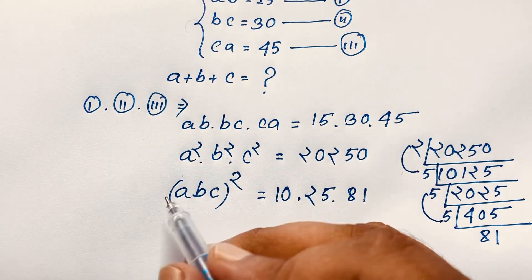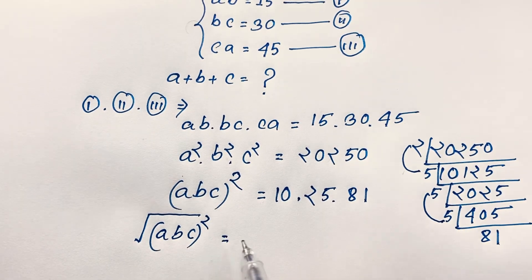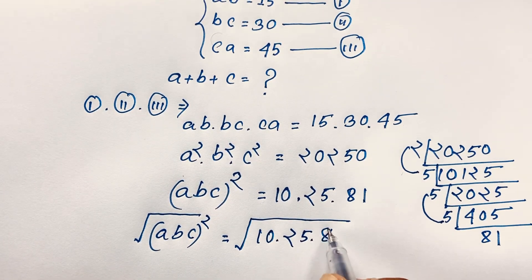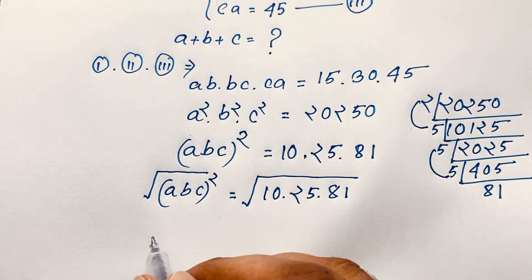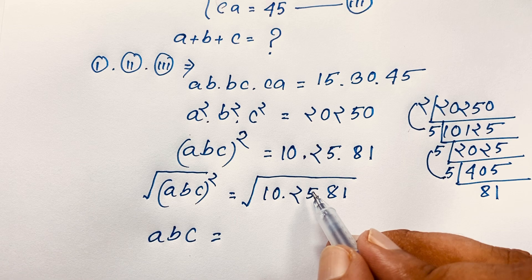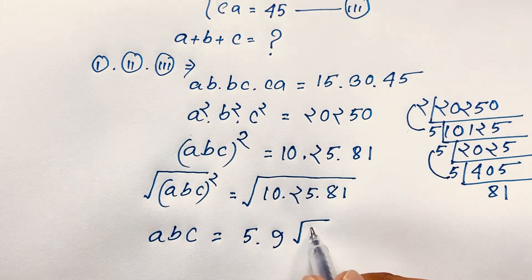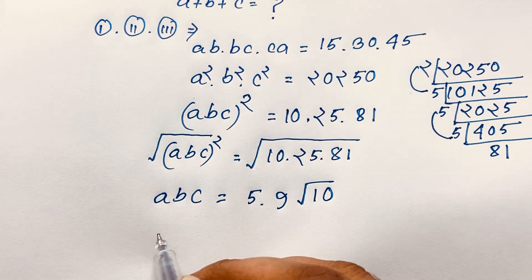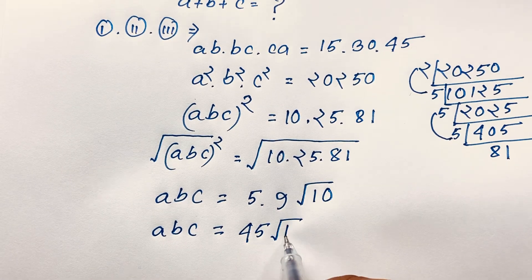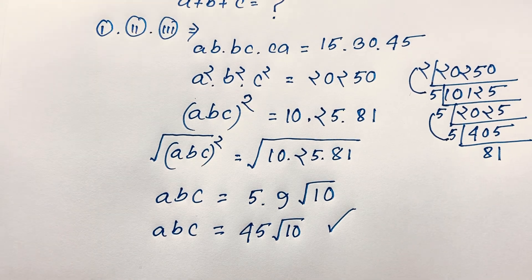Taking the square root of both sides: abc = √(10 × 25 × 81) = √10 × 5 × 9 = 45√10. So abc = 45√10.